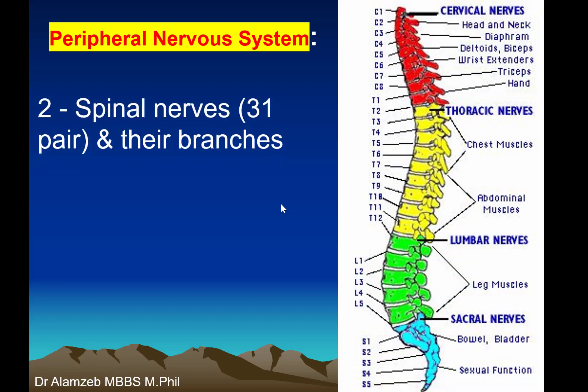The other type is Spinal Nerves. Spinal Nerves are 31 pairs, and they arise from the right side of the Spinal Cord and from the left side of the Spinal Cord. So 31 nerves arise from each side, making 31 pairs or 62 nerves in total.